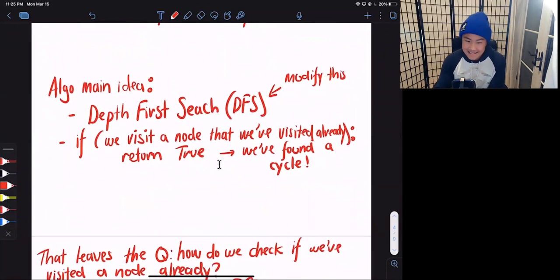So what we want to do is we want to basically run a modified version of depth first search. And in this depth first search modified version, if we've identified a cycle, then we return true. And we know that we found a cycle when we visit a node that we have visited already.